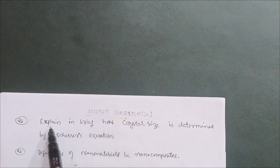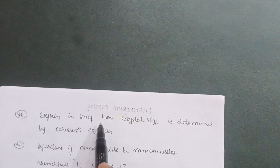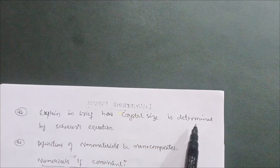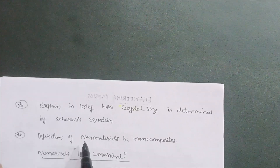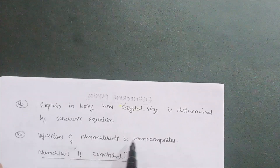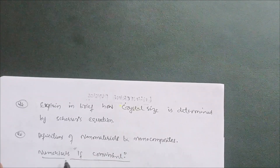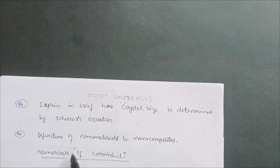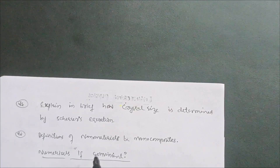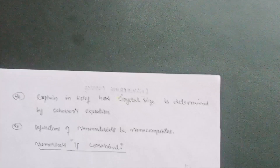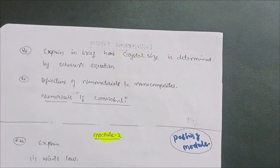Also for Module 5, cover: explain briefly how crystal size is determined by Scherrer's equation, and the definitions of nanomaterials and nanocomposites. If you are comfortable with the numerical part, you can go through that as well. This is the content you need for Module 5.